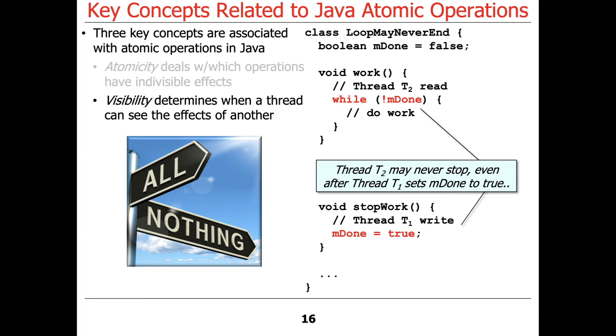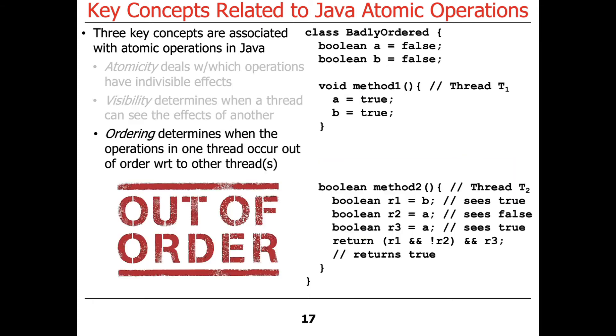T2 may still spin because the state of the field mdone will not necessarily propagate from thread T1 and its core cache to thread T2 and its core cache. And that's because mdone is not synchronized properly. So its visibility is going to be an issue.